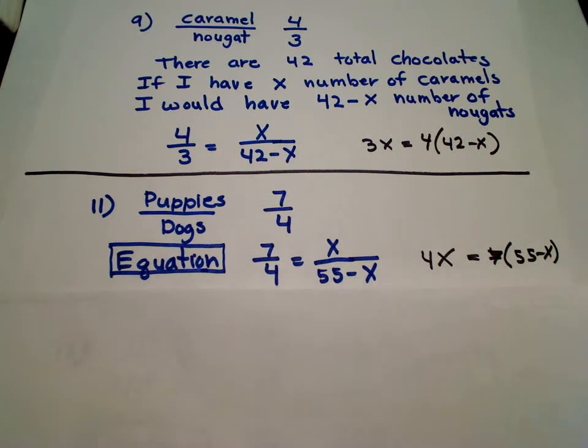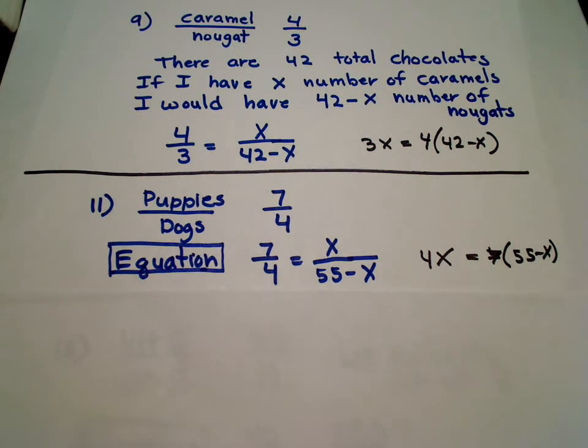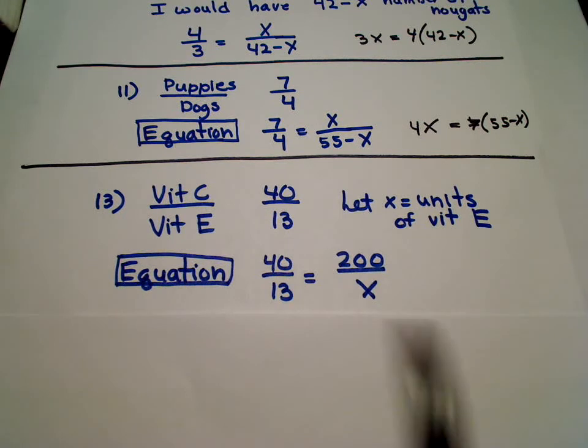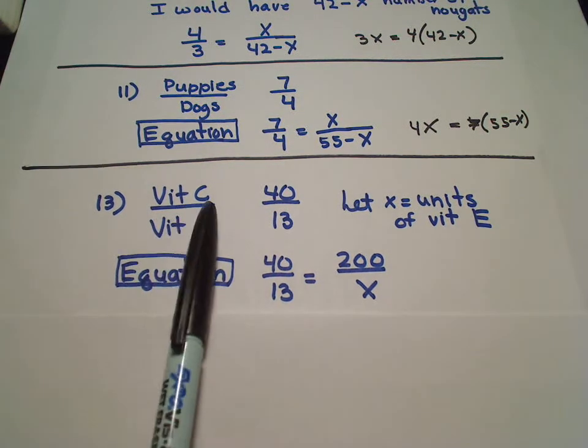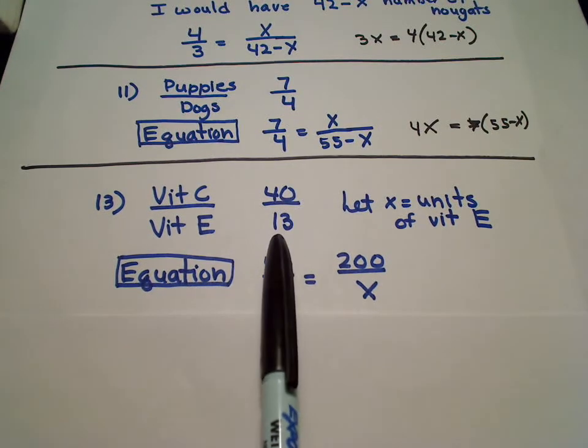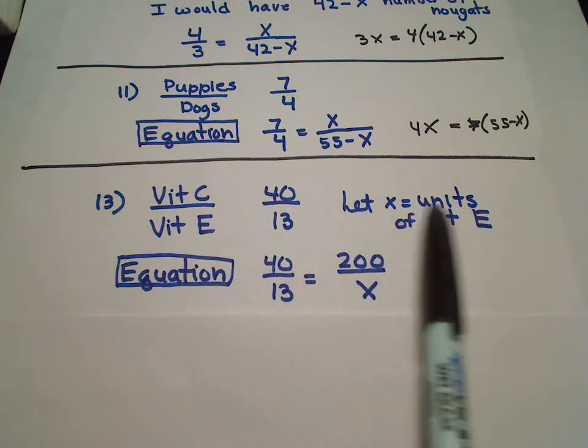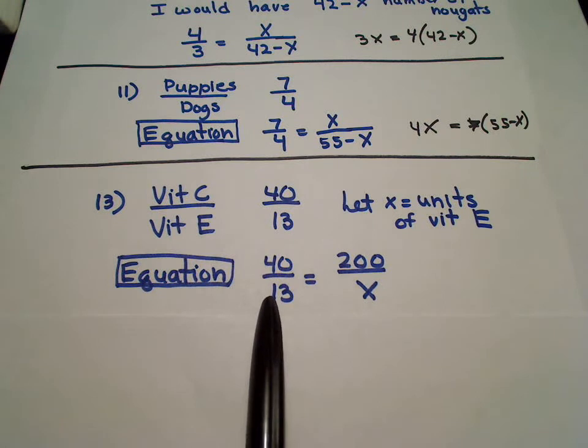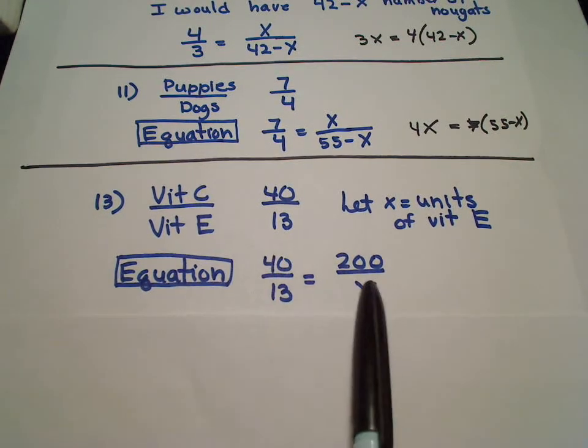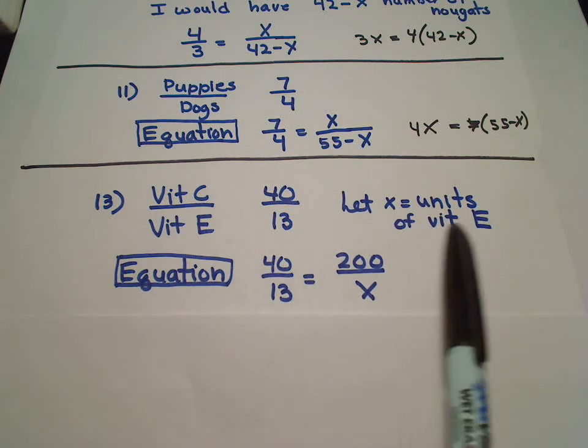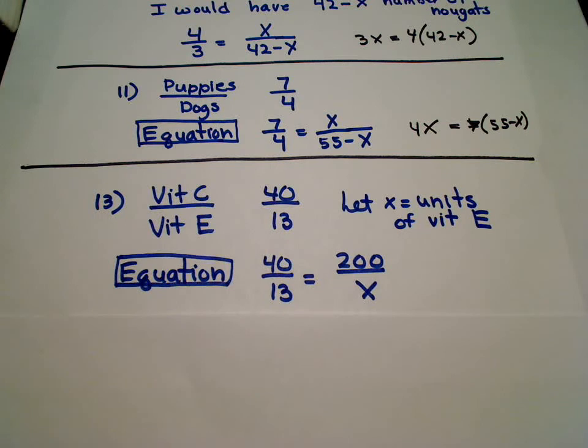Then you have one more problem, which I'm just going to show you the setup, and I'll let you complete the whole process. And problem number 13, they're talking about vitamin C and vitamin E, so they're saying for every 40 tablets of vitamin C, there are 13 tablets of vitamin E. Once again, the units are here, we're going to set it up 40 units to 13 units, 200 over x, and once again, you're going to cross multiply, looking for x, which happens to be the number of units of vitamin E. That should help you as far as setting up ratio problems.